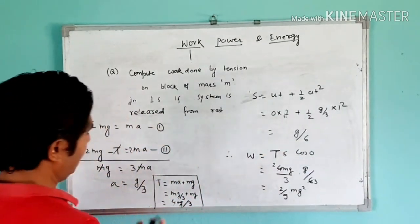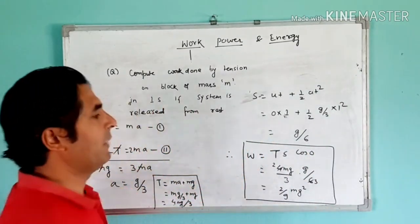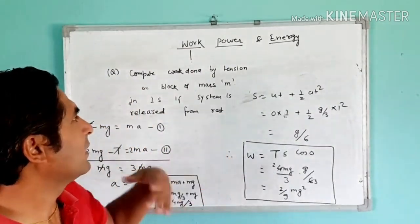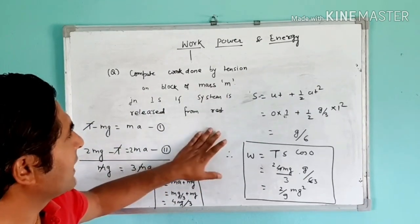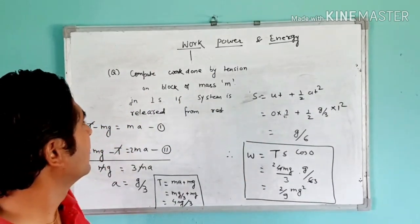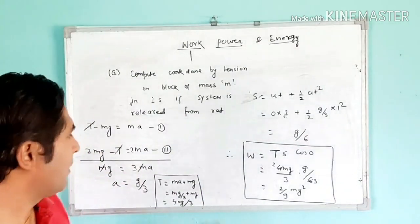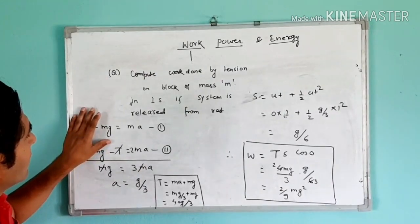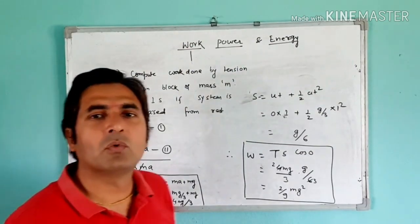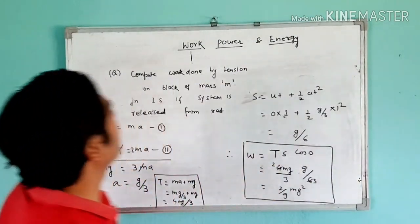This is the work done on block of mass M by the tensile force. As homework, calculate the work done by tensile force on the block of mass 2M. This problem was very conceptual, as it revised the whole previous chapters. We applied Newton's second law and the equations of motion. That is why I chose this topic of work, power and energy.